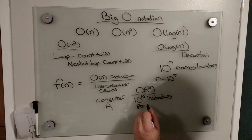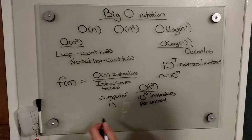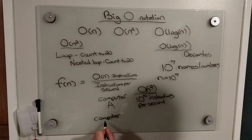And we'll say computer A is actually a really fast computer. It can handle 10 to the 10 instructions per second.